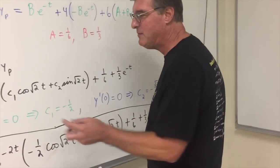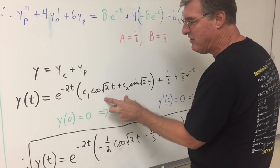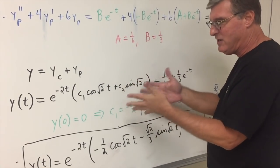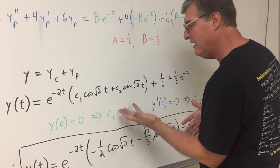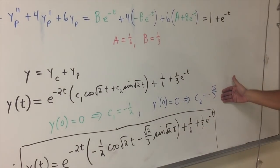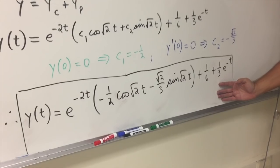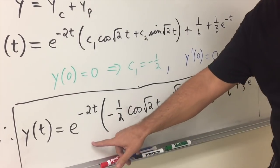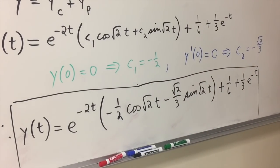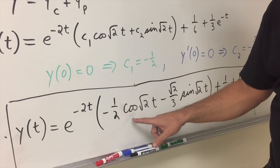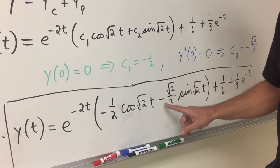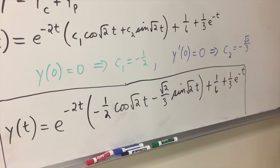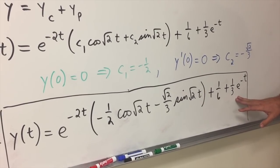Now, you know, I kept the e to the minus 2t factored out of this, even if I multiply it back in there. When you're taking a derivative, you still have to use product rules there, so I kept it factored out. And this will work out for you. But anyway, see, now you have your final answer with the c1 and the c2 in here. So the final answer here is y of t is equal to e to the minus 2t times parentheses negative 1 half cosine square root of 2t minus root 2 over 3 sine root 2t in parentheses plus 1 sixth plus 1 third e to the minus t.